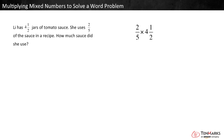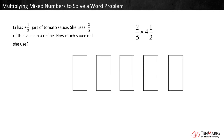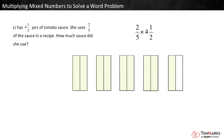Let's make an area model to solve. Each whole represents one jar of sauce. Lee has four and a half jars, so break the wholes into halves and shade four and a half, or nine halves.